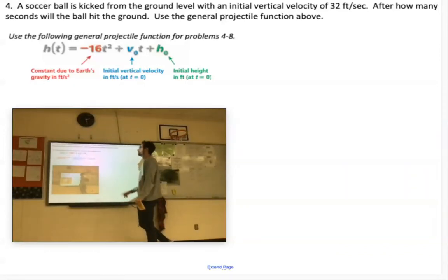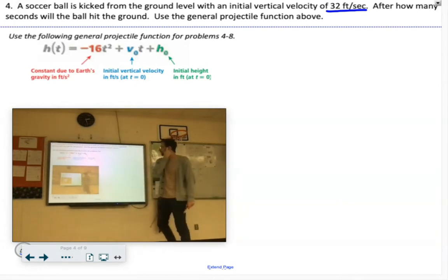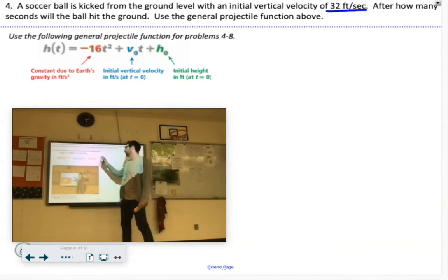A soccer ball is kicked from ground level with an initial vertical velocity of 32 feet per second. That's probably going to be some important information there. After how many seconds will the ball hit the ground? Use the general projectile function above. I put it below here.